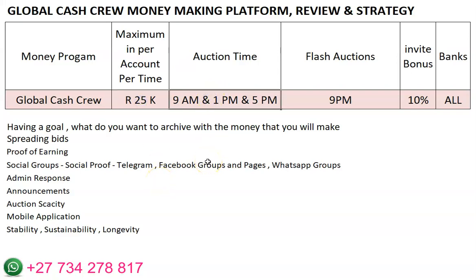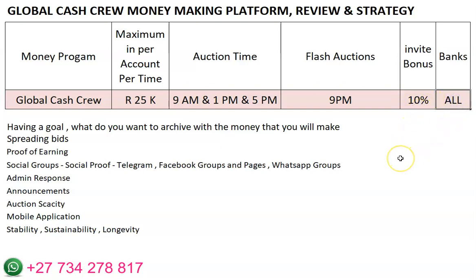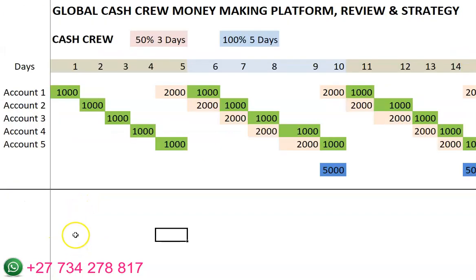The auction times are 9 AM, 1 PM, and 5 PM. There is also what is called a flash auction which just pops up and usually comes at 9 PM. For every person that you introduce, the referral percentage has been reduced from 10% and is now 5%. You can actually use all the banks to take out your money from this program when your shares or coins mature.